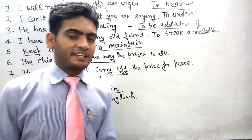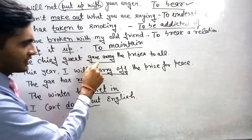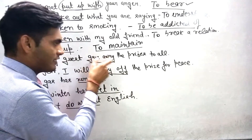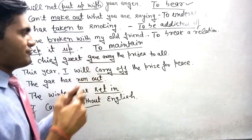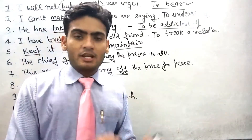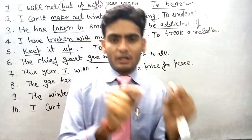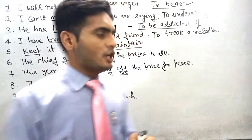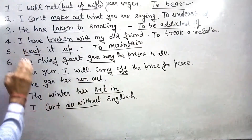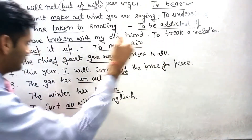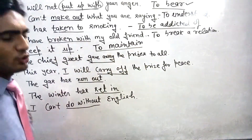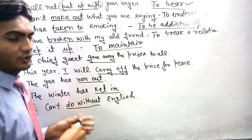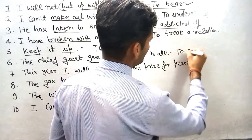छठा sentence है: 'The chief guest gave away the prizes to all.' यहाँ phrasal verb है 'give away' — इसकी first form है 'give away' और यहाँ second form 'gave away' use हुई है। Give away का मतलब होता है बाँटना, यानि distribute करना। So the chief guest distributed the prizes to all. Give away means: to distribute.